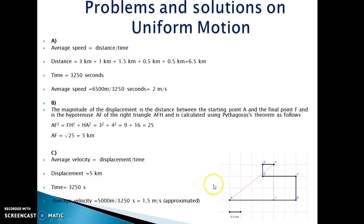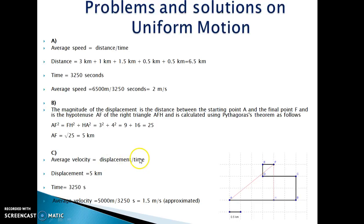For the magnitude of displacement: displacement is the change in initial and final position. Initial position is A and final position is F, so total displacement is from A to F. Using Pythagoras theorem, AF comes out to be 5 km. So the magnitude of displacement is 5 km. Next, average velocity is given by total displacement upon time. Total displacement is 5 km and time taken is 3,250 seconds, so average velocity comes out to be approximately 1.5 meters per second.